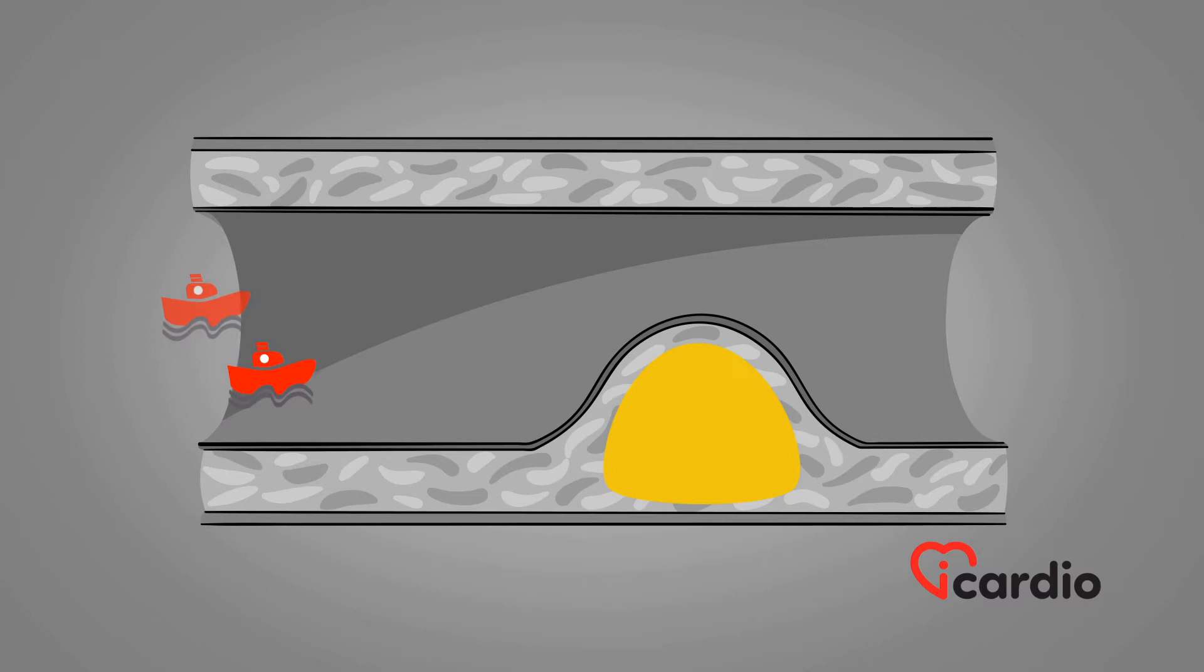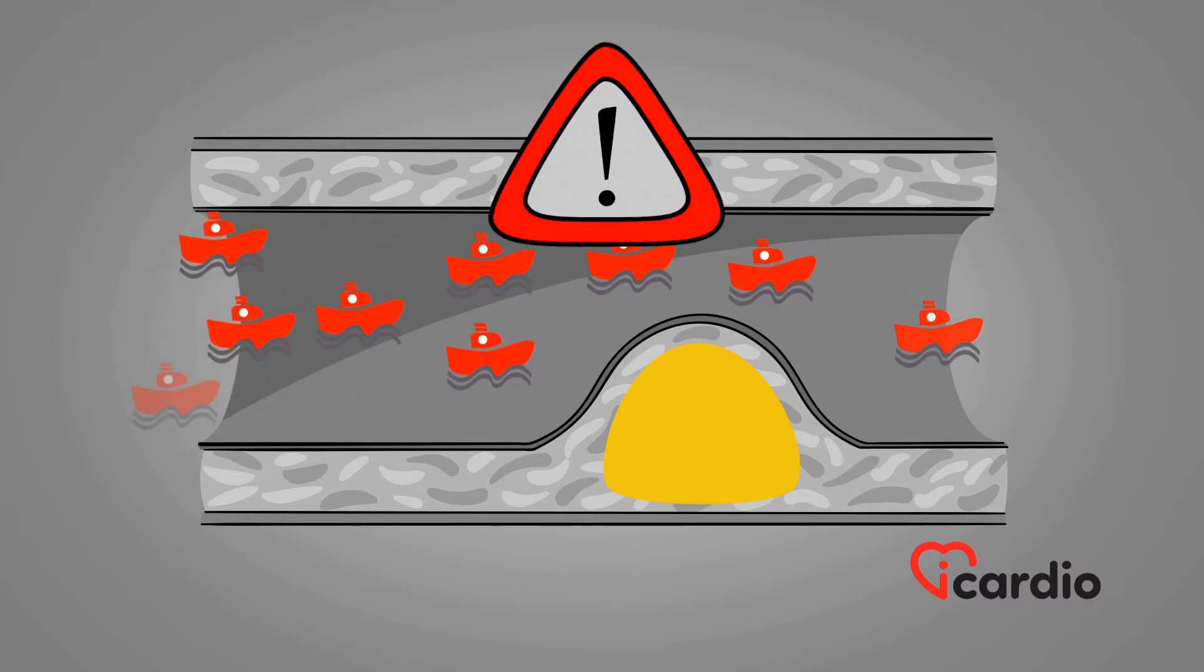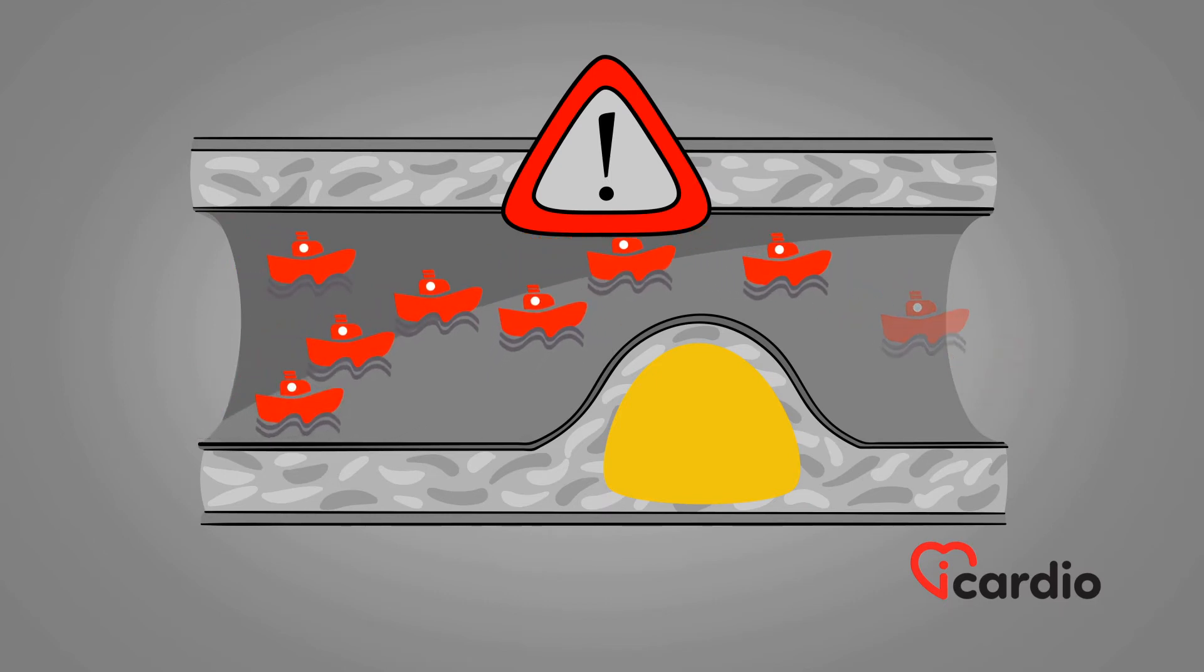When an artery's diameter shrinks by more than 60% due to the presence of a plaque, its ability to deliver oxygen to the heart is compromised. Angina manifests when the arteries cannot circulate enough blood in their respective areas of the heart to provide an adequate supply of oxygen.